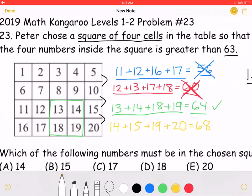Now, let's look at the last one. This square is 14 plus 15 plus 19 plus 20, which is equal to 68. That's greater than 63, so that also works.